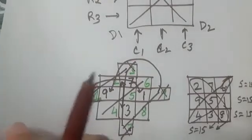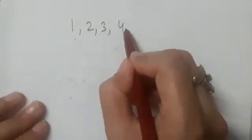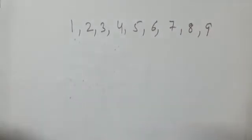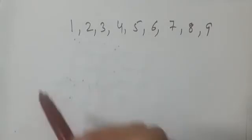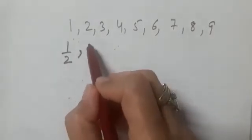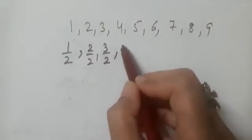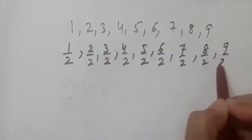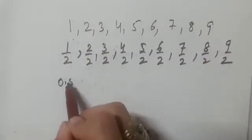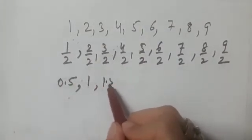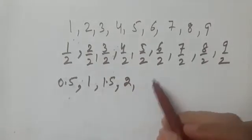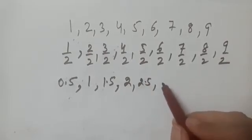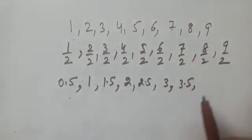Let me take one more example. Earlier we took one, two, three, four, five, six, seven, eight, nine. What if we take half of each of them? That means we take fractions: one-half, two-halves, three-halves, four-halves, five-halves, six-halves, seven-halves, eight-halves, and nine-halves. You will notice that one-half is 0.5, two-halves is 1, three-halves is 1.5, four-halves is 2, and five-halves is 2.5.